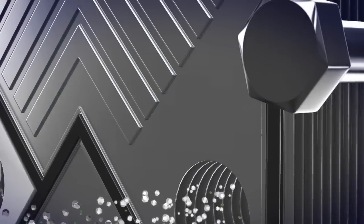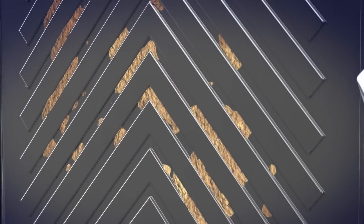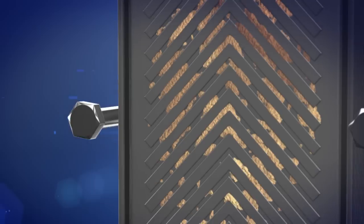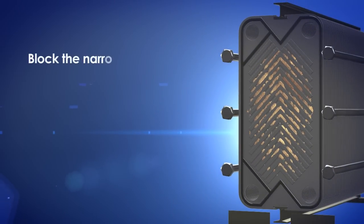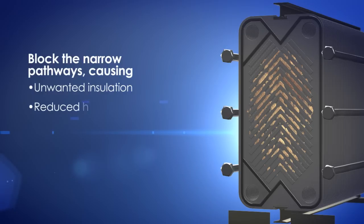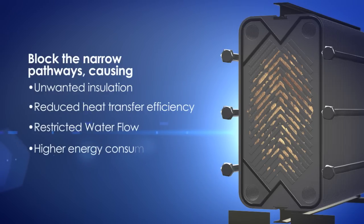Over time, accumulated scale on the heat plates, along with biofilm that consists of bacteria, algae and barnacles from the seawater, block the narrow pathways, causing pollution, unwanted insulation, reduced heat transfer efficiency, restricted water flow and higher energy consumption.